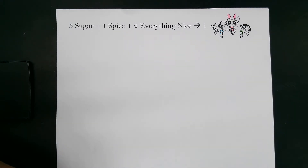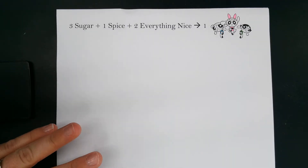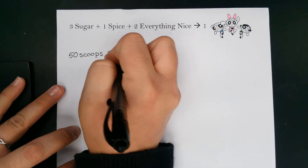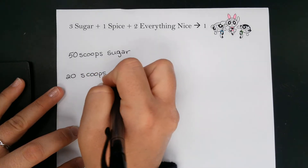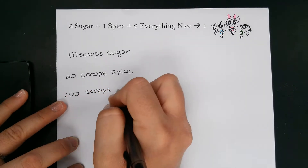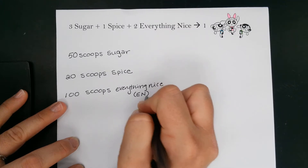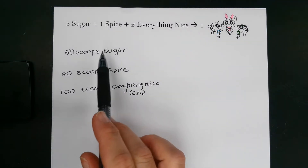Let's imagine we're trying to make as many Powerpuff Girls teams as we possibly can because giant lizards have taken over or something of that nature. We go back into our warehouse for our Powerpuff Girls materials and we see that we have 50 scoops of sugar, 20 scoops of spice, and 100 scoops of everything nice — abbreviated as EN.